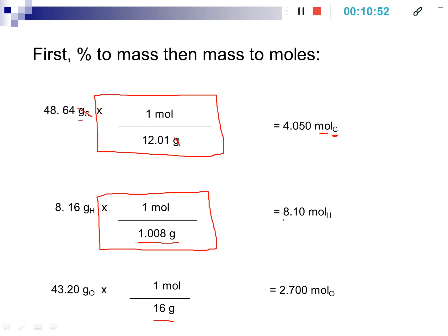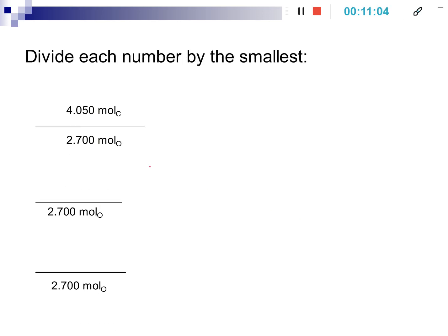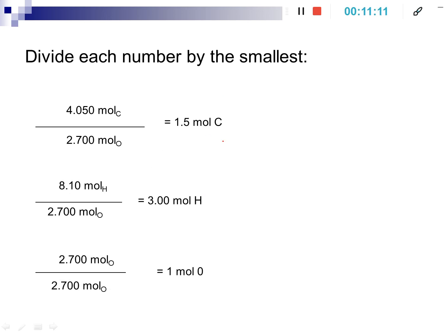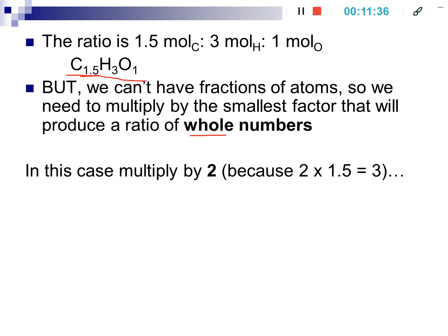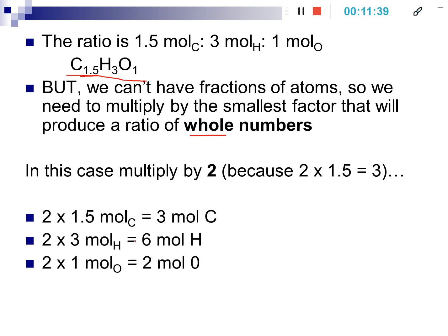This gives us our mole ratio: 4.05 to 8.10 to 2.7 for carbon, hydrogen, and oxygen. We can't change the ratio, but we need to express it as a lowest whole number ratio. Divide by small — 2.7 is the smallest. Dividing all by 2.7 maintains the ratio but gives a smaller expression. However, we get a non-whole number — 1.5 carbons — which doesn't make sense. So we multiply each number by 2 to maintain the ratio while getting whole numbers.